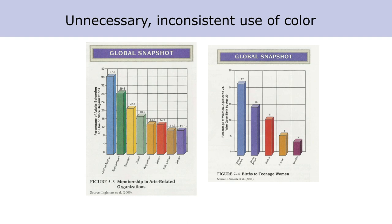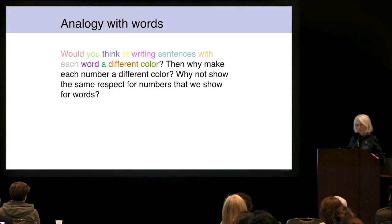Here's a different sociology textbook, and we see that each bar is a different color. There's absolutely no need to make each bar a different color — unless, for example, you're interested in a particular country. In this book, lots of the examples have countries. Suppose I'm interested in Sweden: I look on the left and it's gold, I come to the right and it's purple. If you're going to use colors, have a meaning for them. Would you think of writing sentences with each word a different color? Then why make each number a different color? Why not show the same respect for numbers that we show for words?